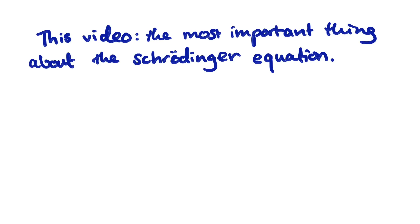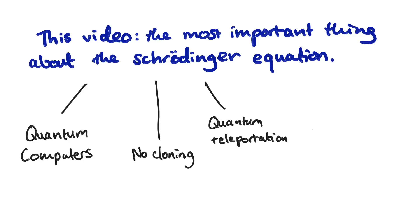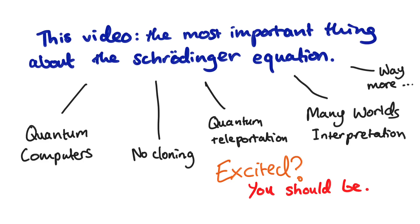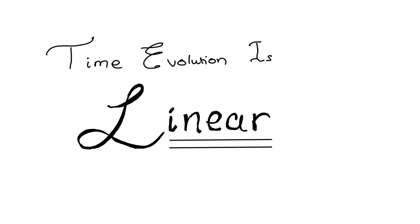That one fact is so important that it's all we need to understand quantum computers and to prove the no-cloning theorem and quantum teleportation and discuss the many worlds interpretation of quantum mechanics plus basically everything else we're going to do. So here it is. Time evolution is linear. Let me explain that.